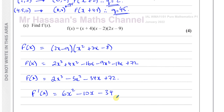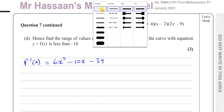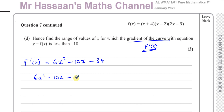Now for part D. We need to find the range of values of x for which the gradient of the curve y=f(x) is less than -18. The gradient of the curve is given by the first derivative, so we want to know when f'(x) is less than -18: that is, 6x² minus 10x minus 34 is less than -18.